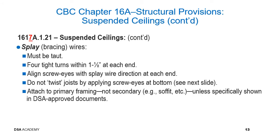Certain things to watch while inspecting bracing wires: the wire must be taut; four tight turns within 1.5 inches at each end; if a screw eye is used, it should align with the bracing wire direction; do not twist joists by applying a screw eye at the bottom; bracing wire should be attached to primary framing members, not secondary members, unless specifically shown in DSA-approved documents.